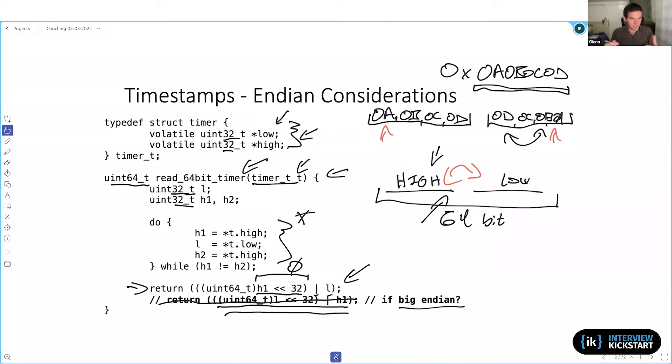So everything with regards to endianness is generally speaking, a question of how is that data represented in memory. But the logical number and the number that we would see in a register, if you look at the value in the register, that is always going to be in this kind of logical form. So because the shifting always occurs on the value in the register, and the register always has the same form, regardless of the endianness of the system, this bit shift, in this case, will always be correct.